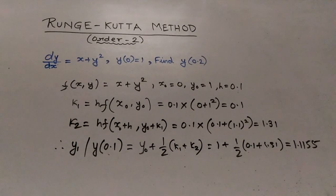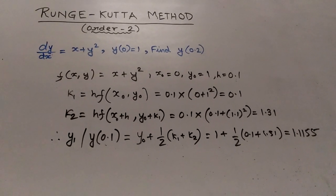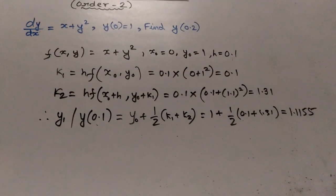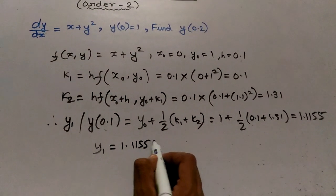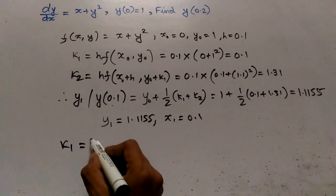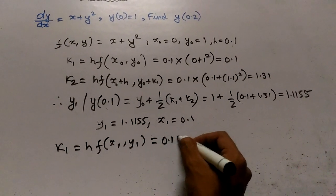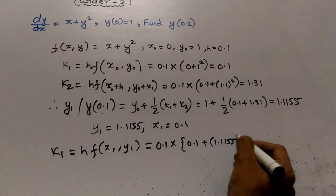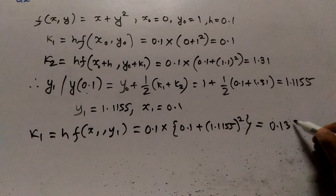Now we have already found the value of y1. Now we will go for y2, or y at x equals 0.2. We have our y1 that is 1.1155 and our x1 that is 0.1. So our K1 will be HF(x1, y1), that equals 0.1 into 0.1 plus 1.1155 whole squared, that is 0.1344.